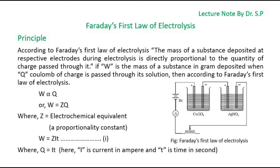According to Faraday's first law of electrolysis, the mass of a substance deposited at respective electrodes during electrolysis is directly proportional to the quantity of charge passed through it. If W is the mass of a substance in grams deposited when Q coulombs of charge is passed through its solution, then W is directly proportional to Q.